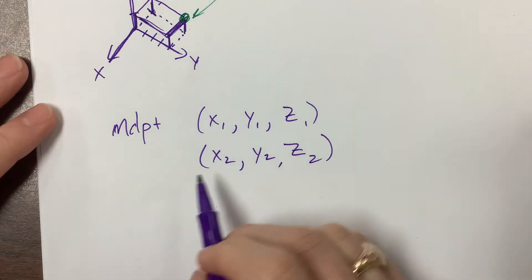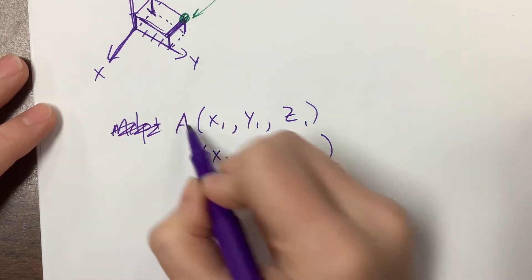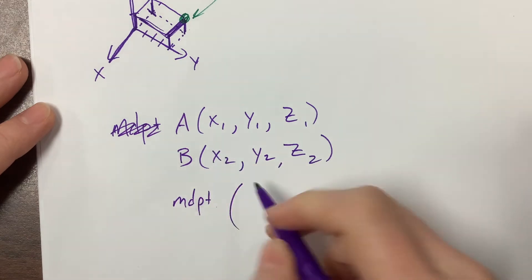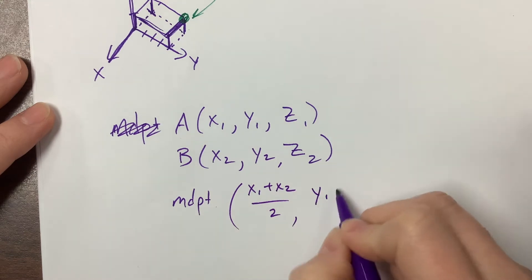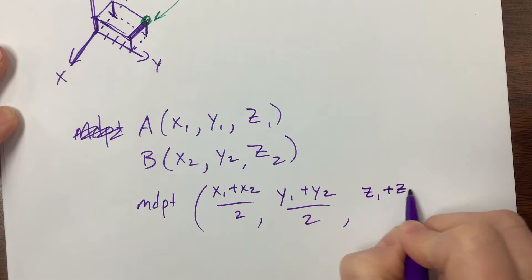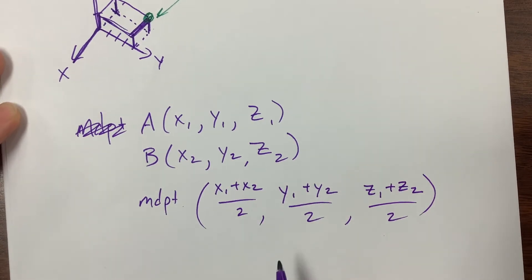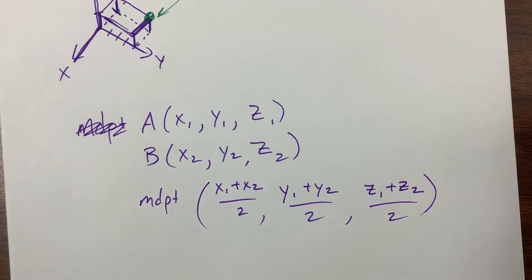Let's say this is point a, this is point b, and so the midpoint becomes the average of the x's, the average of the y's, and the average of the z's. This right in here is something that you've seen from geometry. So we're just now adding the z component.